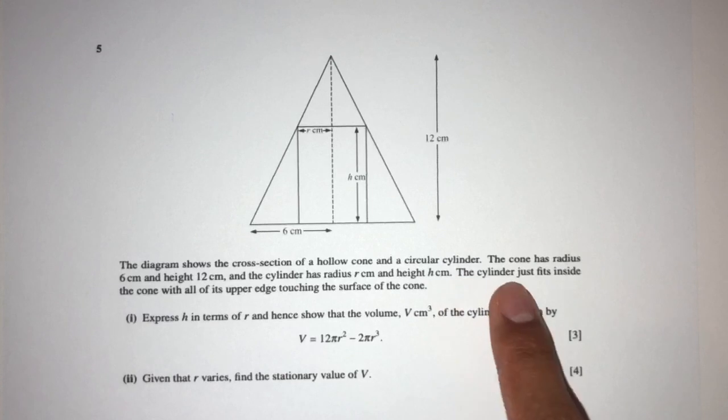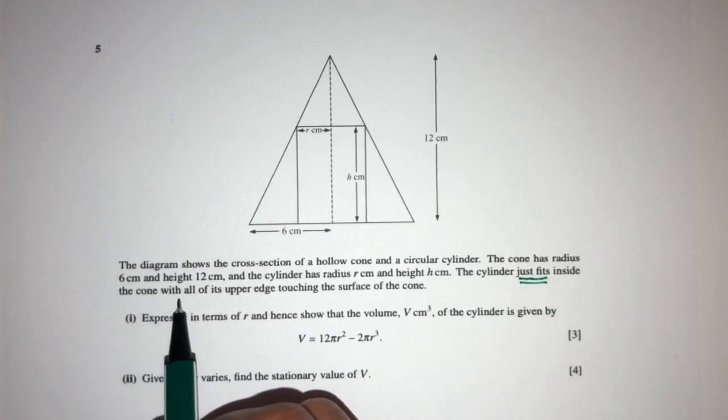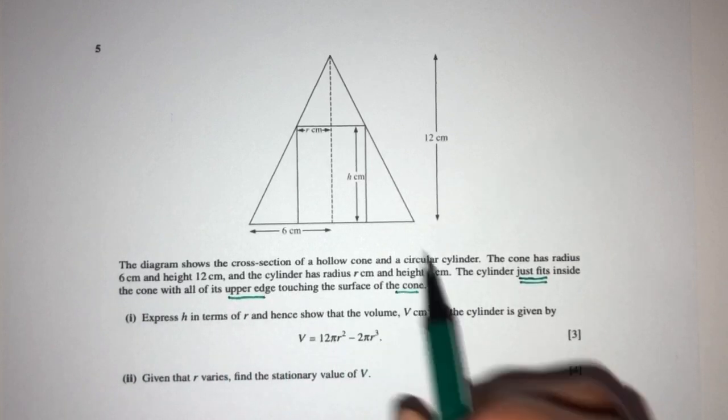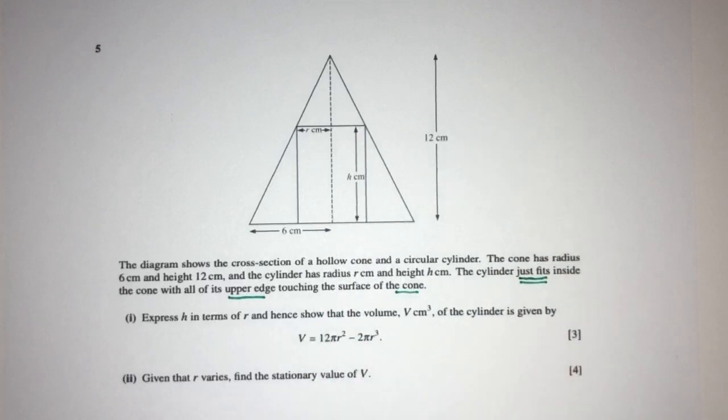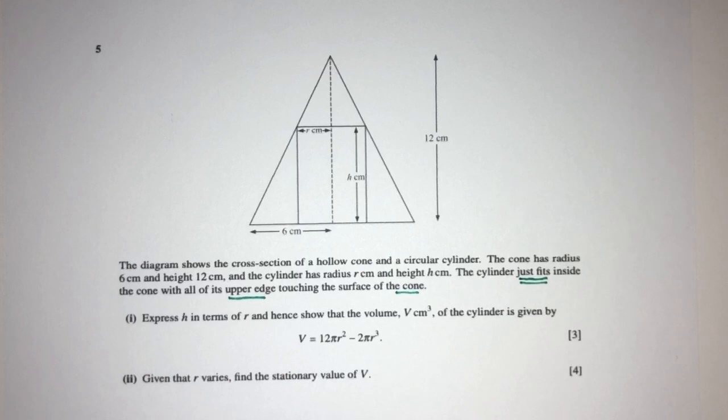Now the cylinder fits, it just fits exactly inside of the cone with all of its upper edge touching the surface of the cone. So the cylinder fits exactly inside the cone. This is R and the height is H.